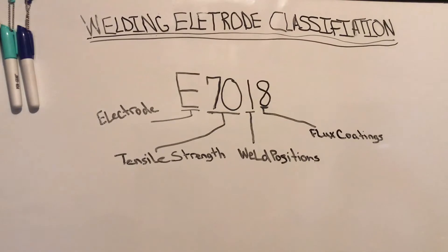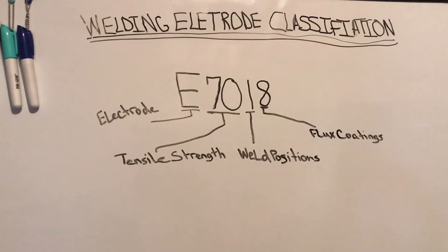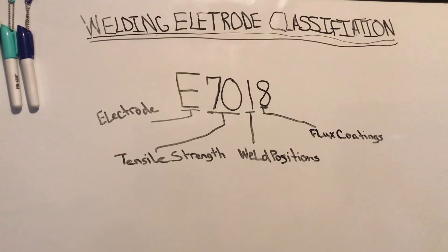Other electrodes have special storage requirements that might not be achievable at the location you're welding — such as 7018 or low hydrogen electrodes, which have to be kept in the oven to prevent moisture from getting at them. There are also specialty electrodes for welding items such as cast iron and other specialty alloys.